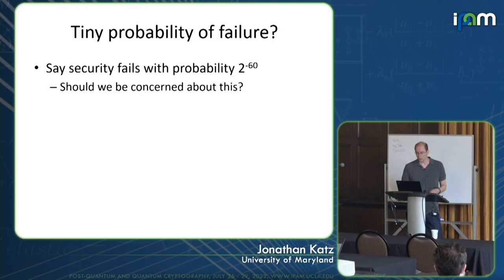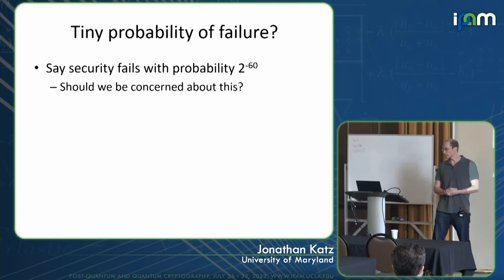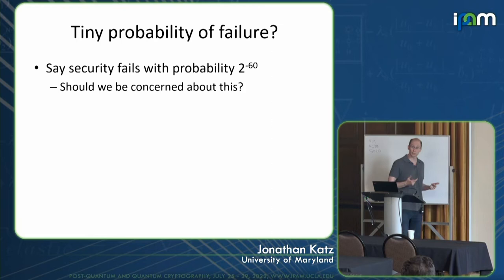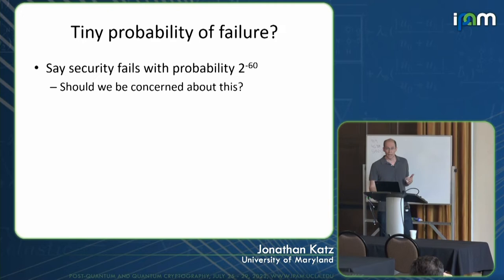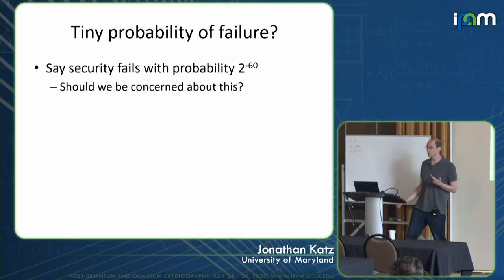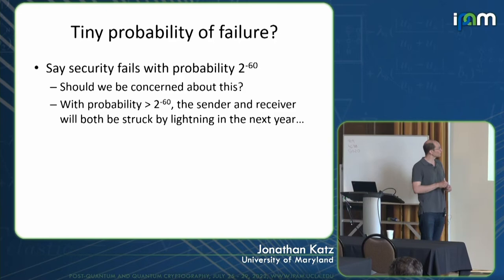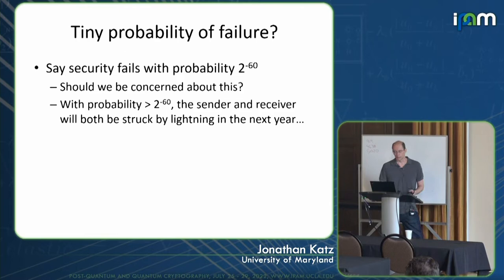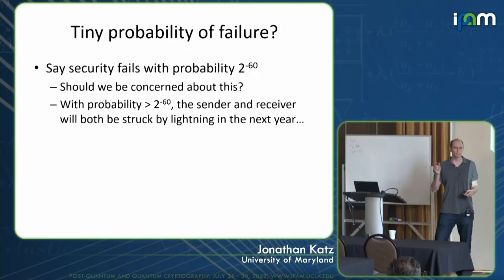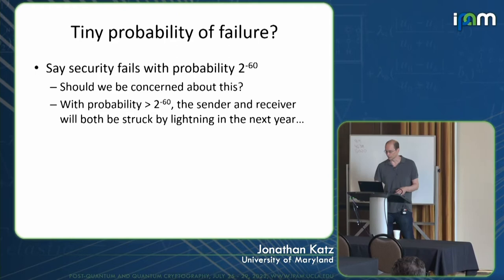Why is it okay to make these relaxations? The probabilities we're talking about are really small — think about security failing with probability like 2^{-60} or smaller. You really should not be concerned about an encryption scheme where security fails with probability 2^{-60}, because with probability more than 2^{-60} both the sender and receiver are struck by lightning in the coming year. So these are really small probabilities that don't matter in practice.